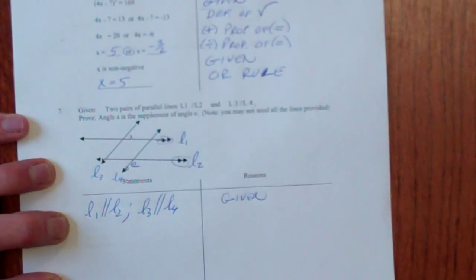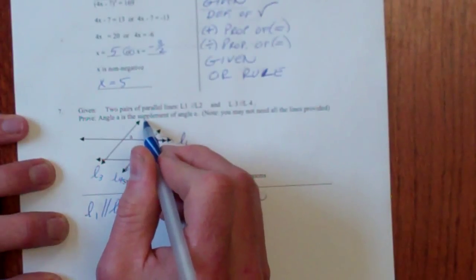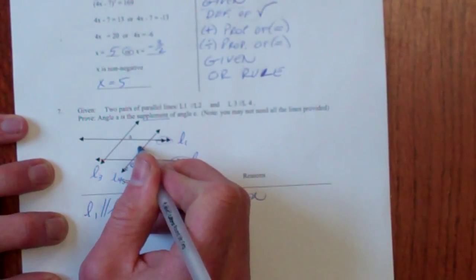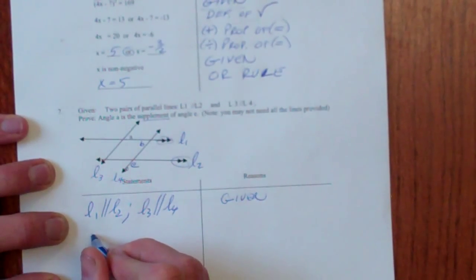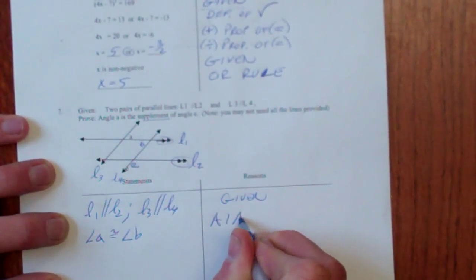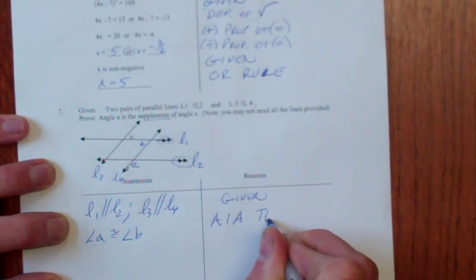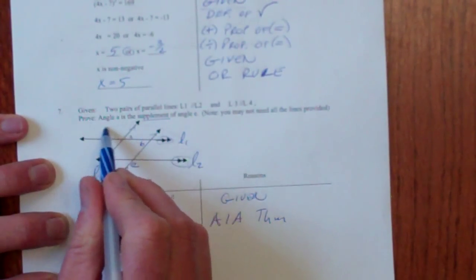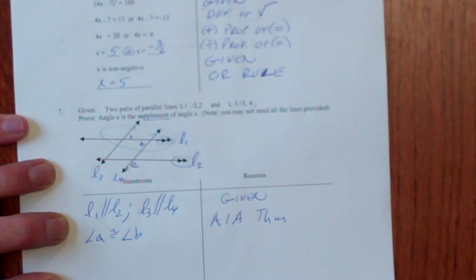I'm going to start off with L1 parallel to L2 and L3 parallel to L4. And that's given. Then I'm going to add, let's see, the simplest way to do it, I'm trying to prove that there are supplements. I think I'm going to go co-interior angle. Maybe I'll do that. I'm going to say there's angle B right there. I'm going to say angle A is congruent to angle B. And that's AIA angle theorem. That alternate interior angles. These guys are parallel and they're cut by this transversal, alternate interior angles.